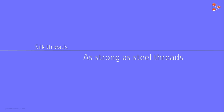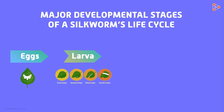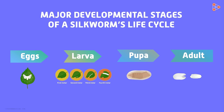The threads in a cocoon are extremely strong — surprisingly as strong as steel threads. The processing of these threads further gives us the silk fibres. In short, these are the four developmental stages of a silkworm's life cycle: the eggs come first, then the larval stage, followed by the pupal stage, and lastly the adult stage where the mature moths fly out of the cocoon.